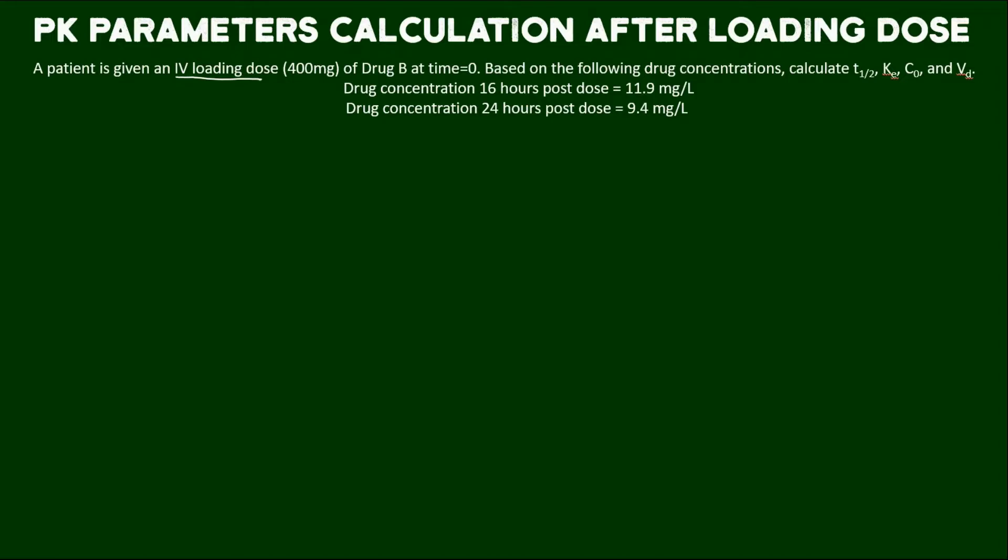Based on the following drug concentrations, we are going to calculate T1/2 or half-life, KE or the elimination rate constant, C0 meaning the initial concentration of the drug, and volume of distribution. The drug concentration 16 hours post loading dose is 11.9 mg per liter, and 24 hours post dose is 9.4 mg per liter. So let's get started.